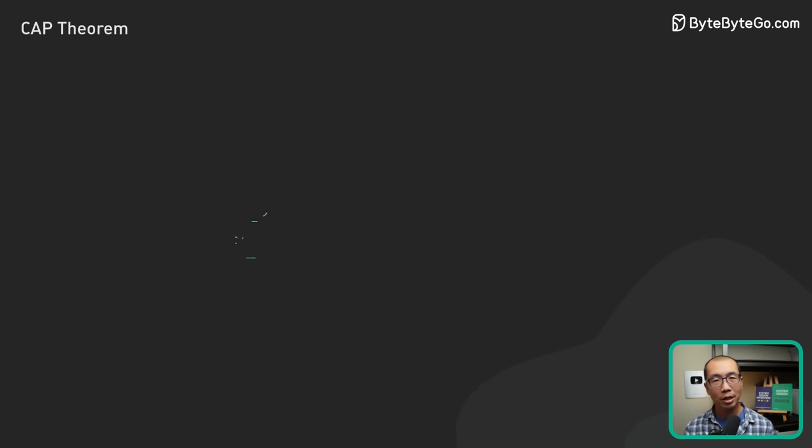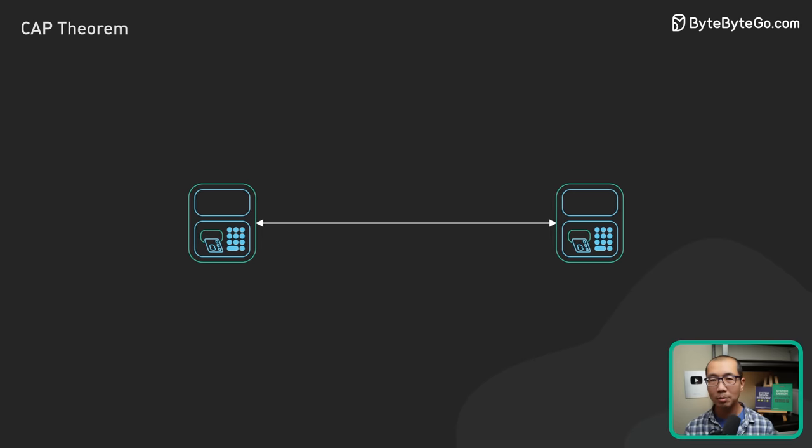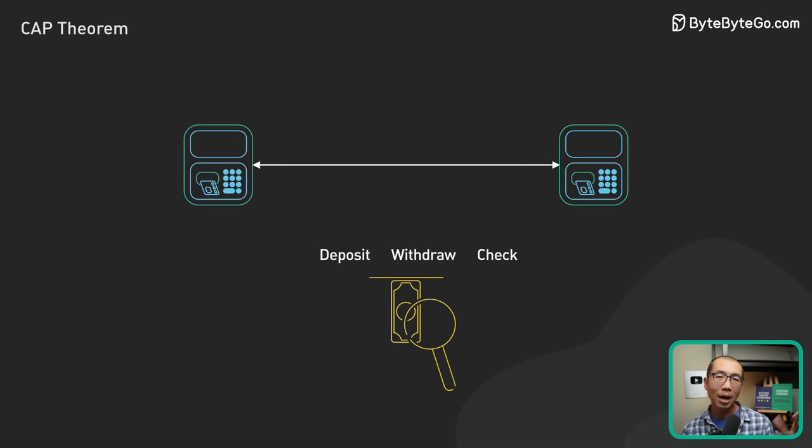Now let's go through a concrete example. Let's say we have a tiny bank with two ATMs connected over the network. The ATM supports three operations: deposit, withdrawal, and check balance.